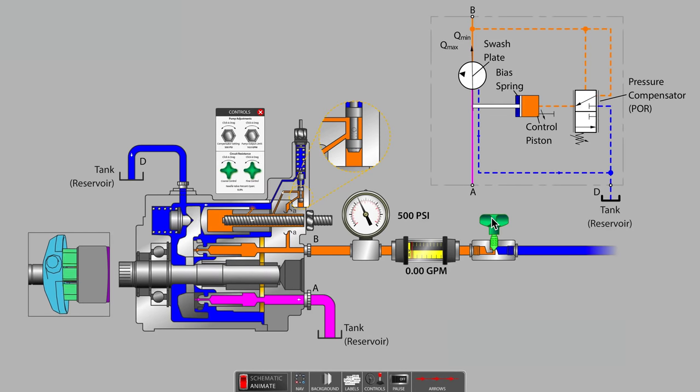But since the needle valve is still closed and there is no flow path available, system pressure quickly reaches the setting of the pressure compensator spring and the control piston once again moves the swashplate towards the zero degree angle where no pump outlet flow occurs. The action of the pressure compensator is essentially maintaining a constant pressure.